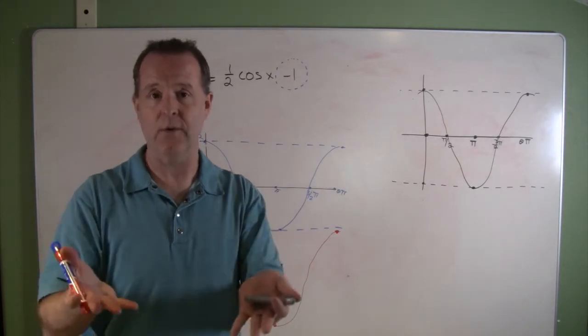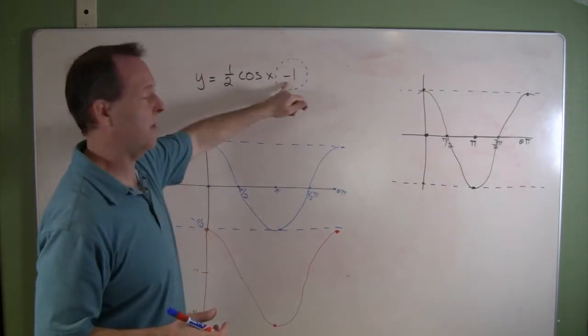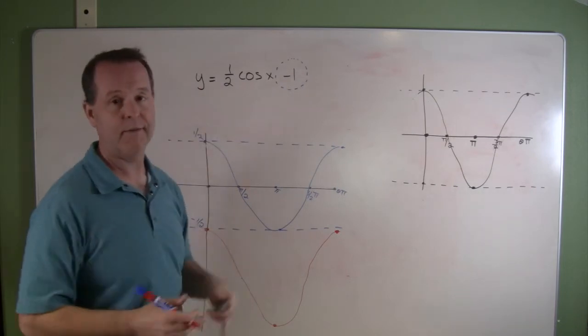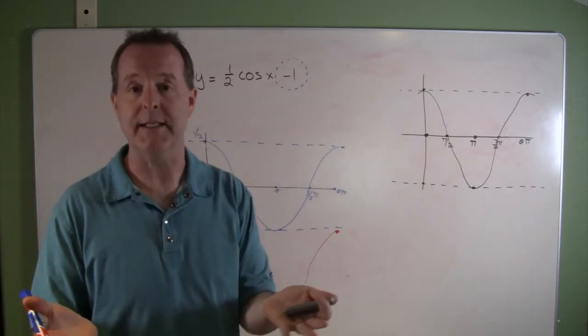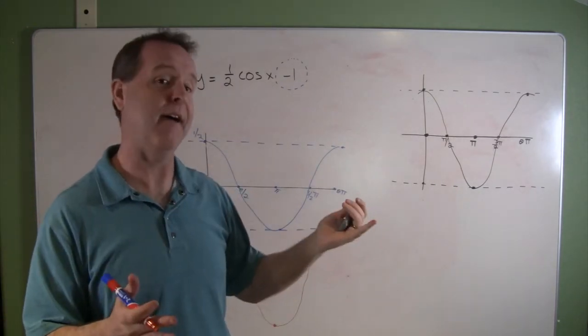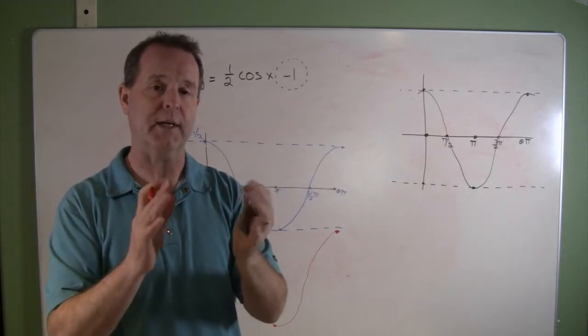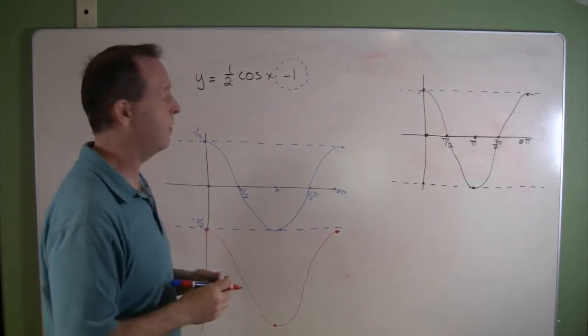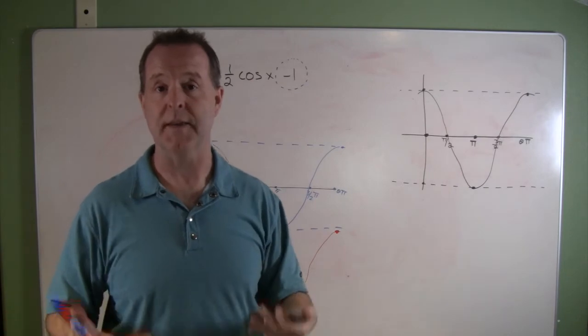And again, it could shift down or it could shift up, all depending on what that value is as well. Now in this graph, you may see some phase shifting. This one did not have any phase shifting or any constricting along the x-axis as well. But we could find those also in these particular problems.